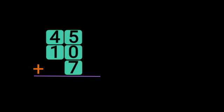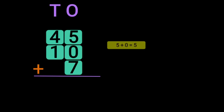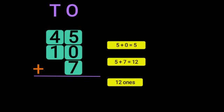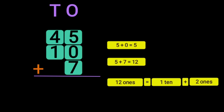Let us do another example. We have two two-digit numbers and one one-digit number. Writing the place values 1's and 10's, begin the addition of the digits in the 1's place: 5 plus 0 gives you 5, and 5 plus 7 gives 12. So you have 12 ones. 12 ones can be regrouped as 1 ten plus 2 ones. Retain the 2 in the 1's place and take the 1 ten as a carry over to the 10's place.